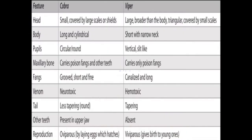Now we differentiate varieties of poisonous snakes. The two families are Elapids, Vipers, and sea snakes. We focus on Elapids and Vipers — Cobras from Elapids and Vipers as a family. The cobra has a smaller head covered by large scales. The viper has a larger triangular head broader than the body with smaller scales. The cobra's body is long and cylindrical, usually 3 to 4 meters, while the viper has a short body with a narrower neck, measuring approximately 1 to 2 meters.